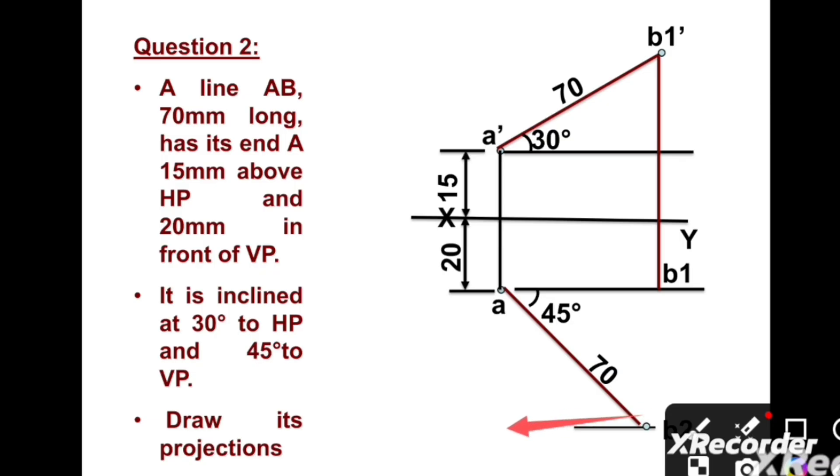We can take radius ab1 and draw an arc in clockwise direction, considering a as the center point. Here we get the intersecting point, which is point b.